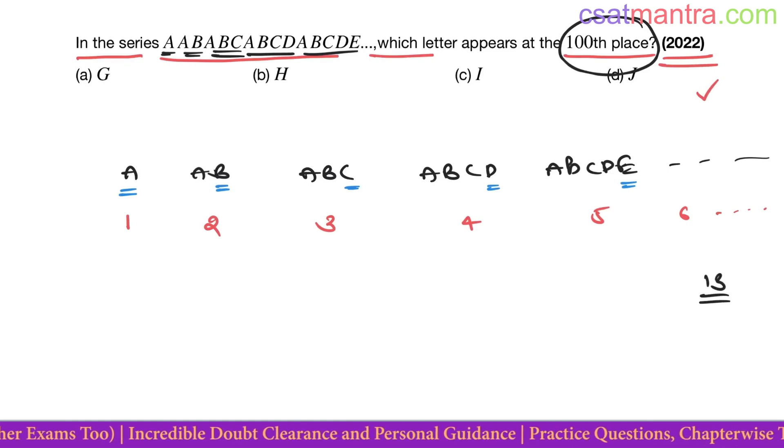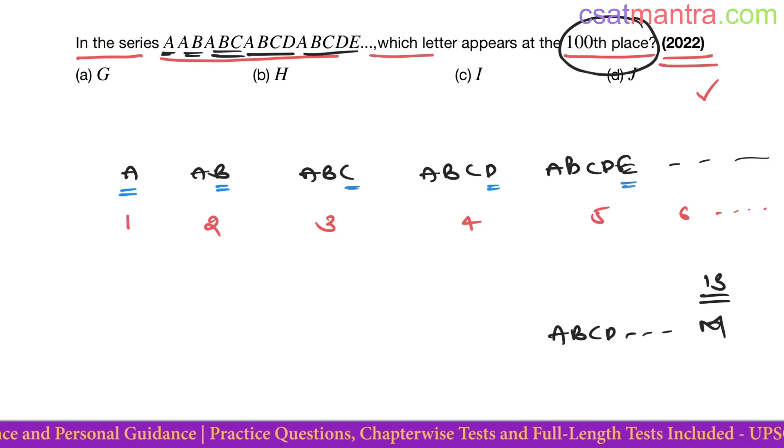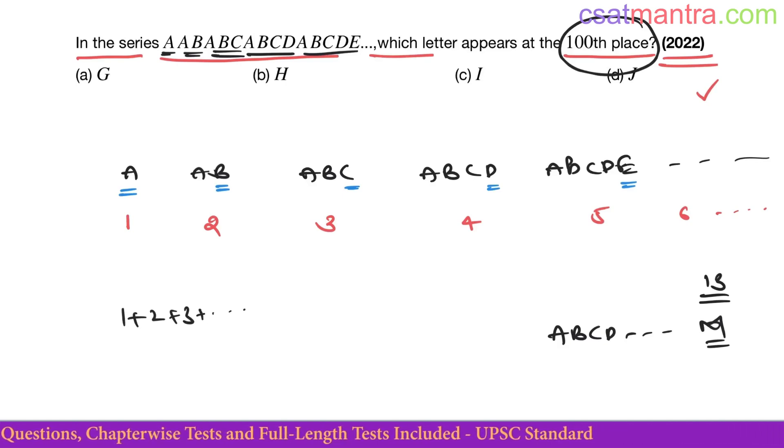Thirteen letters group. What is thirteen letters group? A, B, C, D, E up to M. M is the thirteenth letter. So sum of all these letters: one plus two plus three plus up to thirteen.